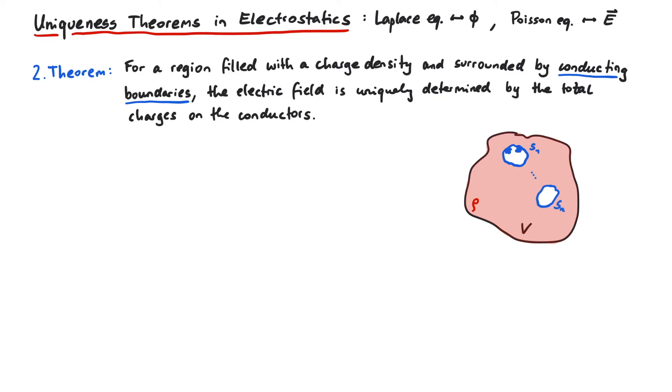And second, these conducting surfaces have some kind of complicated charge distribution on them. But the theorem tells us that we do not care about the exact charge distribution on the conductors, we're only interested in the total charge on them. Let's prove the theorem.